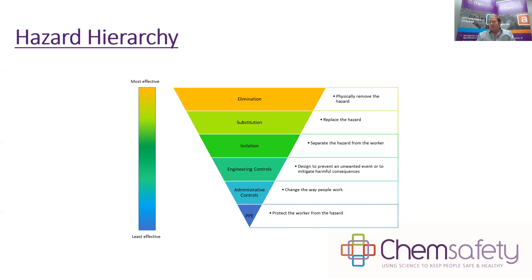In that same situation, we could substitute — deciding to use granite or marble benchtops with a much lower silica content instead of engineered stone. That's substitution: replacing the hazard. Other forms of substitution include choosing the same product in a different form, such as using a pelletized form rather than a dusty dry powder, which binds it up and reduces the dust hazard.